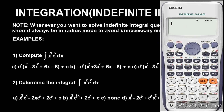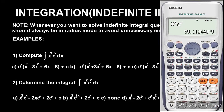Now we input the integral function. We have x cubed — to bring out X, press Alpha before pressing X; pressing X alone will not work. Use the power function and press 3 for x cubed. Then for e to the power x, press Shift, then the exponential button, then Alpha X. Press equals and we get 59.11.